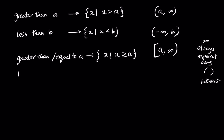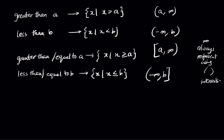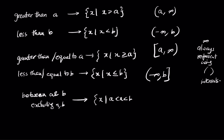For less than or equal to b, in set notation it becomes x such that x less than or equal to b. In interval notation it becomes open interval negative infinity comma b closed interval. This is the representation when you want less than or including b. For between a and b excluding both, we write x such that a less than x less than b, or open interval a comma b.